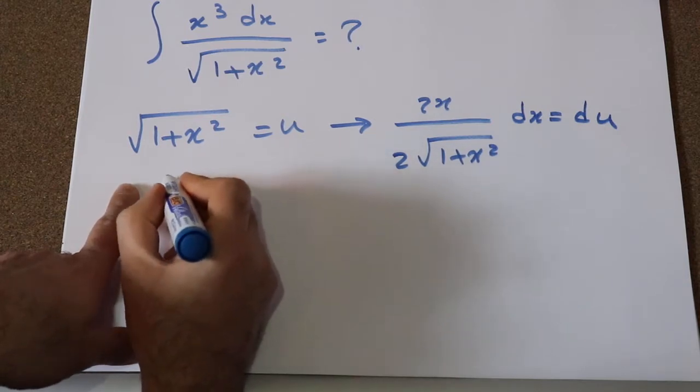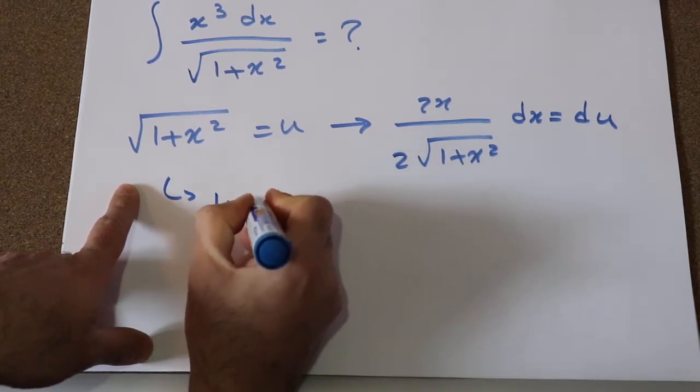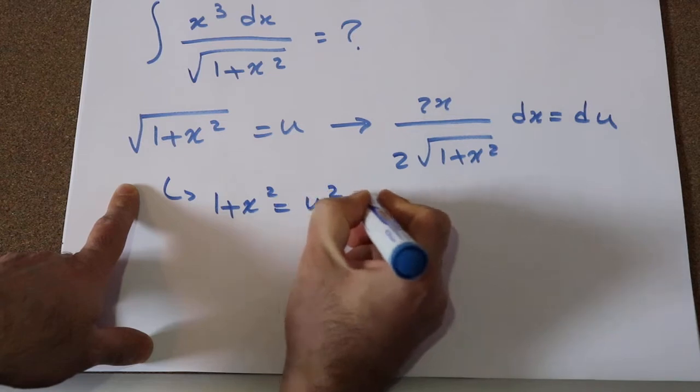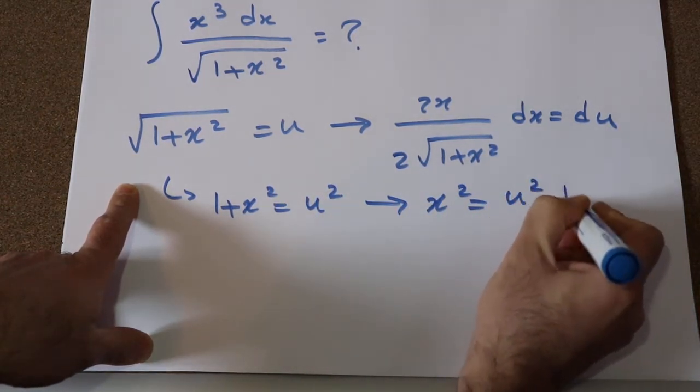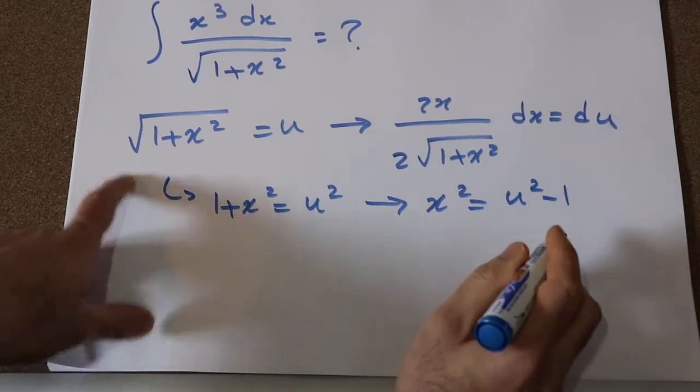also from this equation, you can conclude that 1 plus x² is equal to u². In other words, x² will be equal to u² minus 1. We will need this equation later, you will see that.